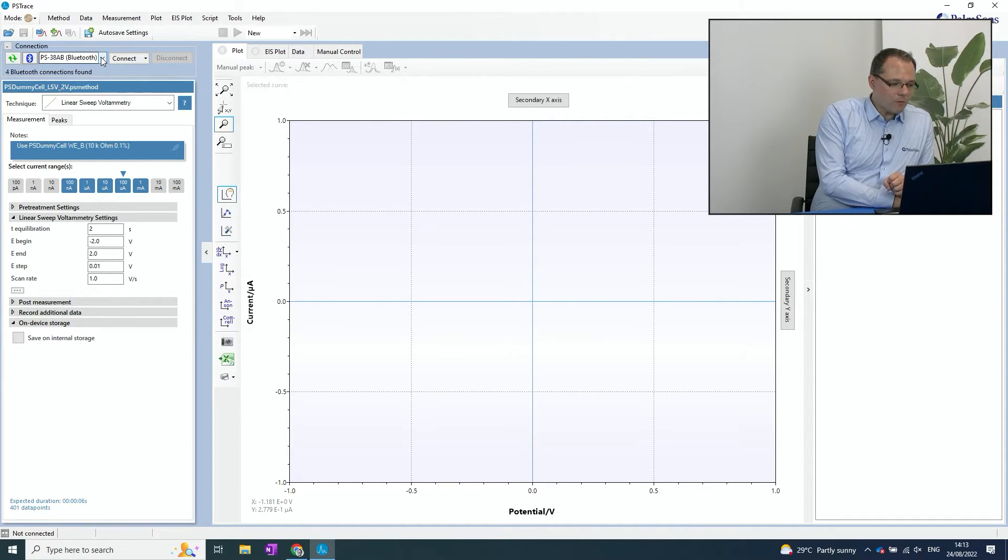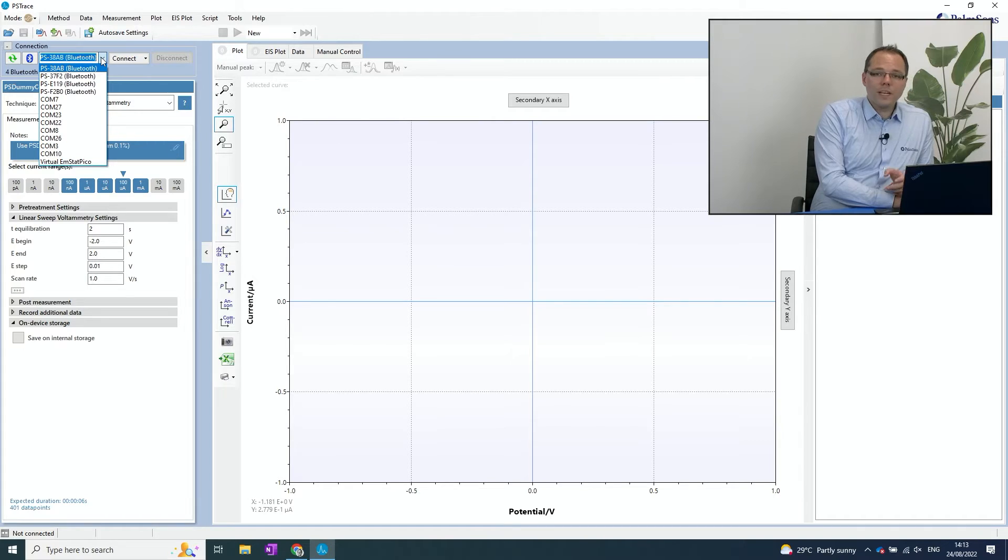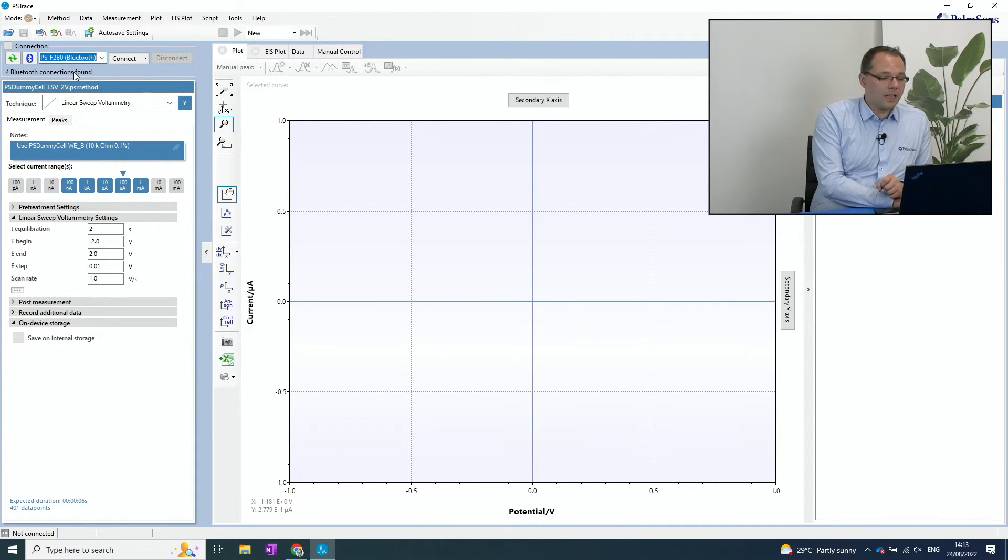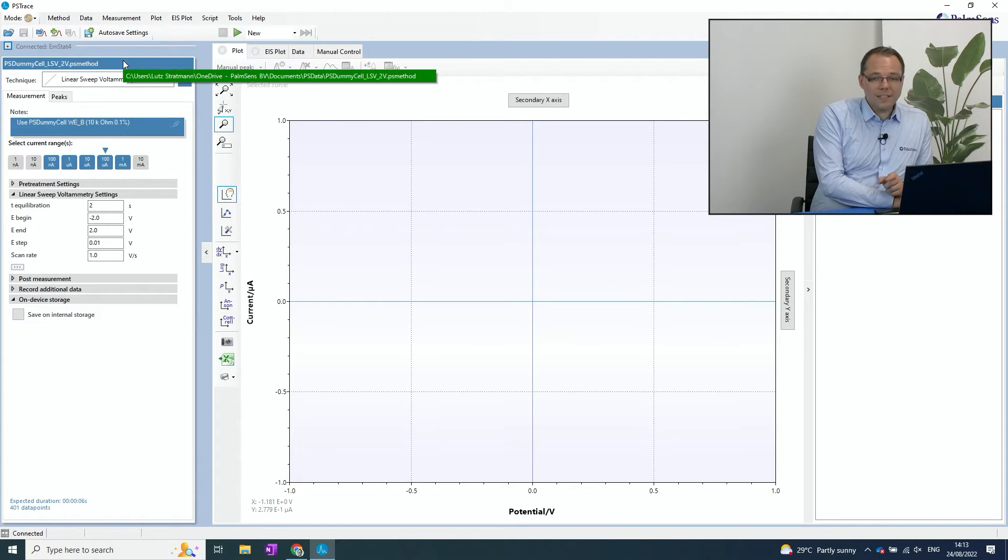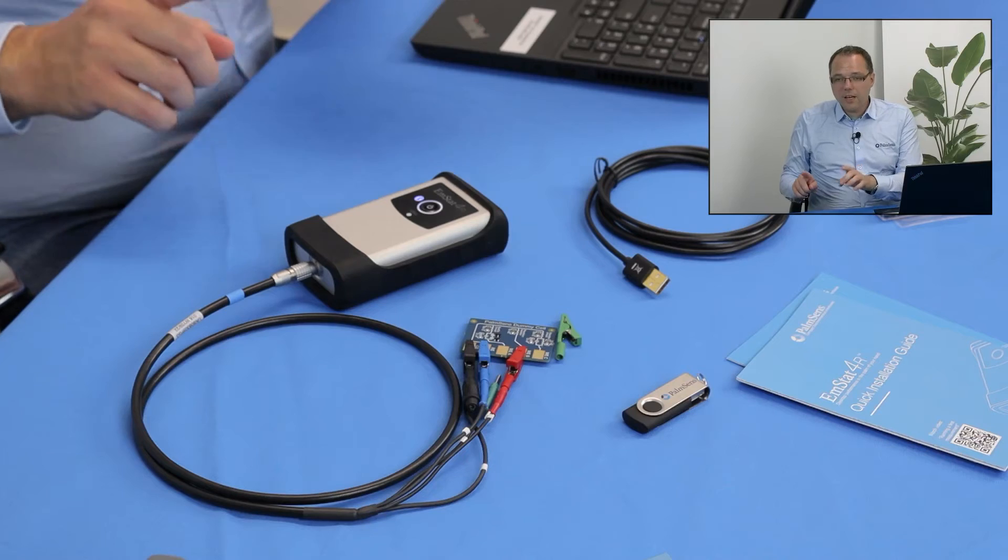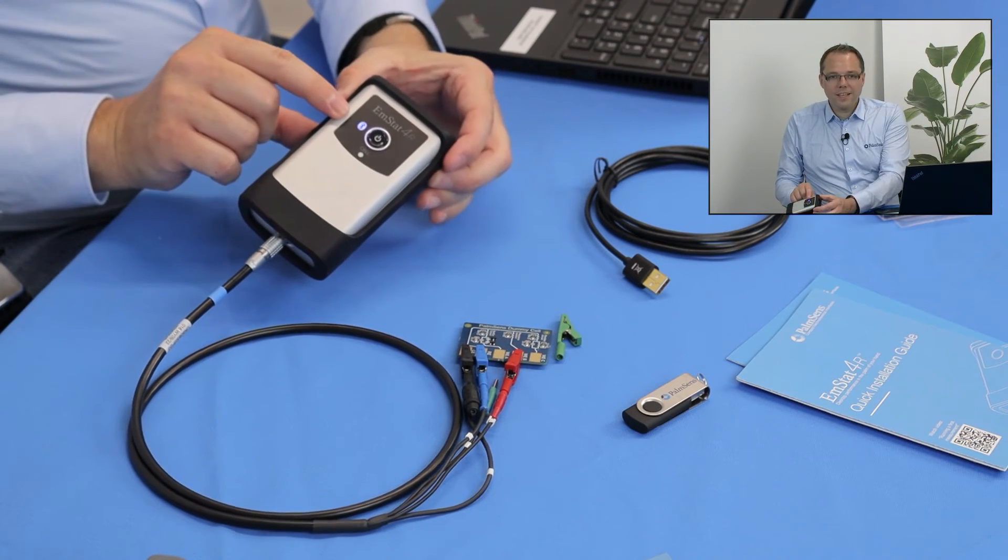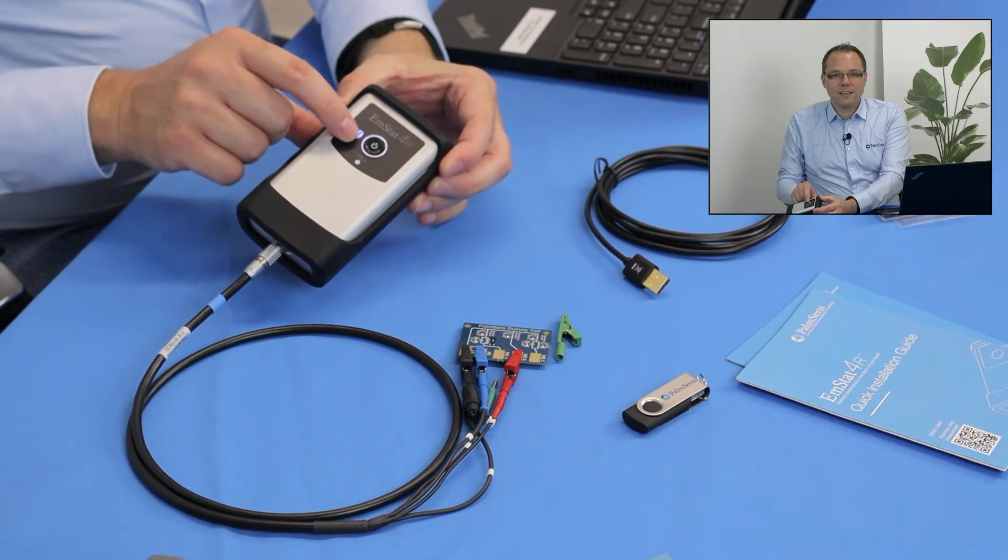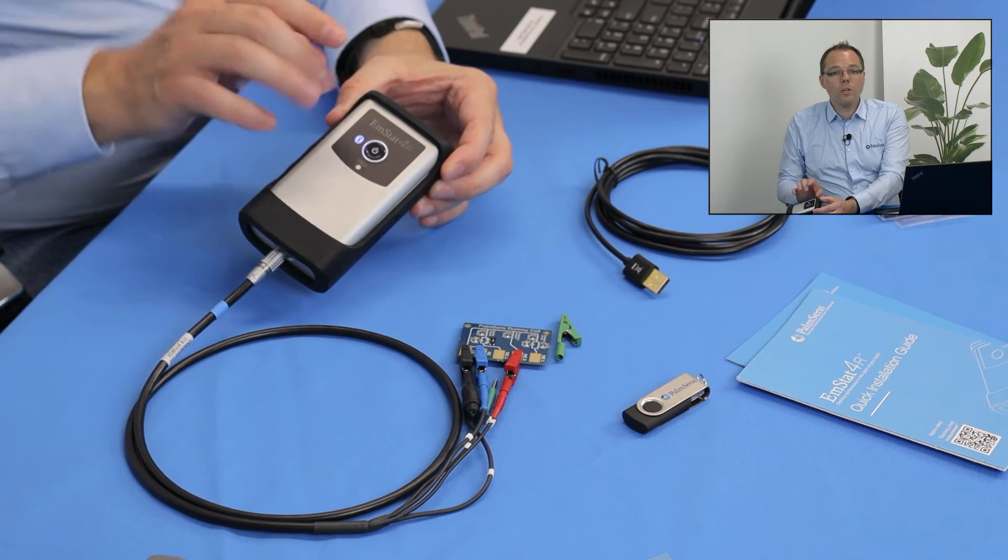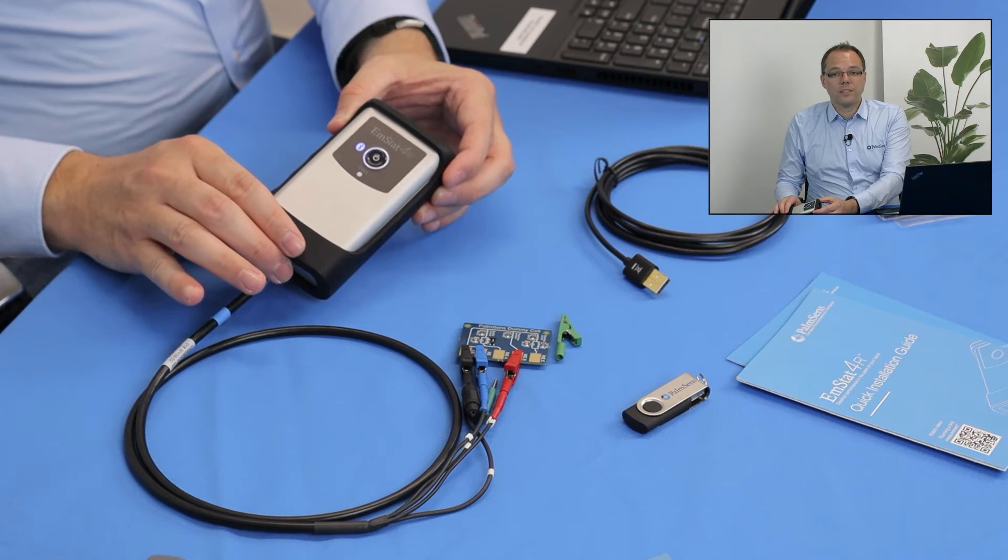Now it found multiple instruments and you can find on the back of your instrument the MAC number and the last four numbers and letters of that number are shown here in the drop-down menu as well. So you can easily identify the instrument that you want to connect. Then I press the connect button and once the instrument is connected, you can also check that on your instrument by the blue light that now illuminates the Bluetooth icon. Now we know this potentiostat is the one that is connected via Bluetooth.